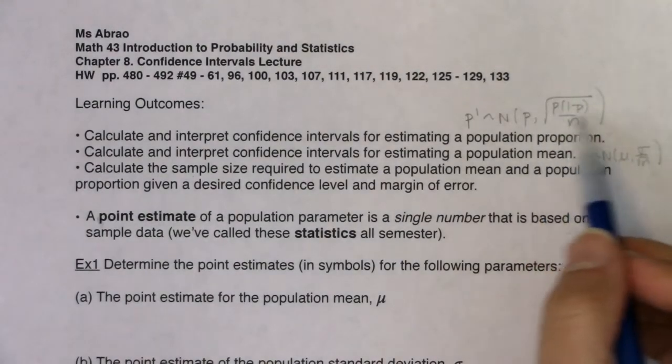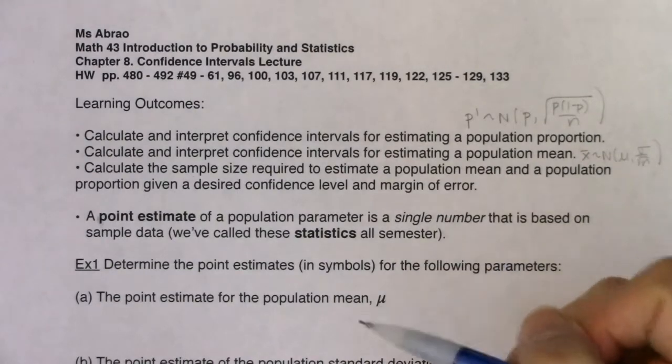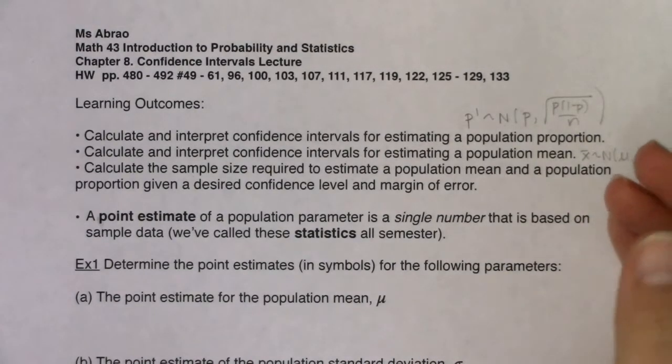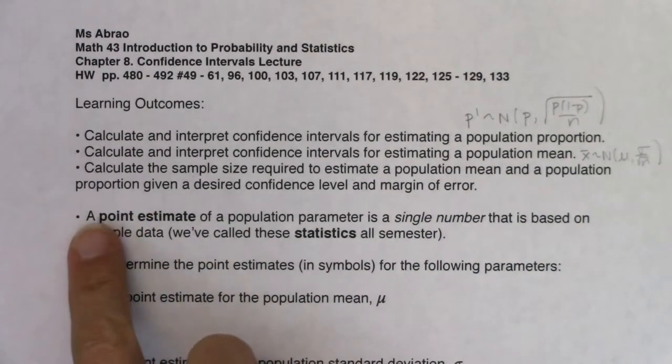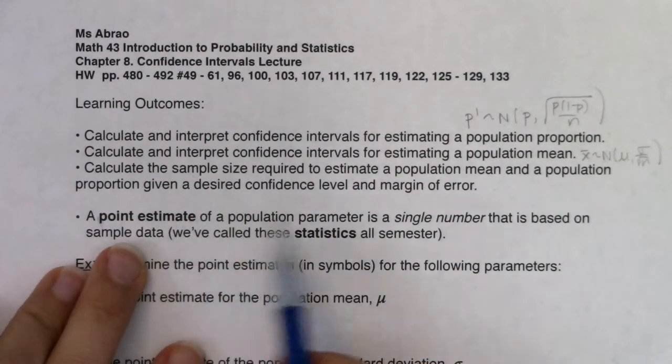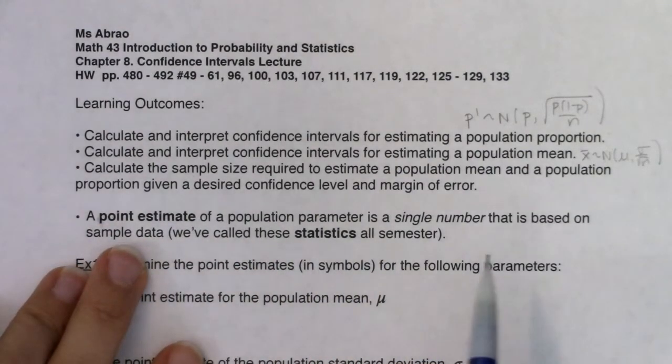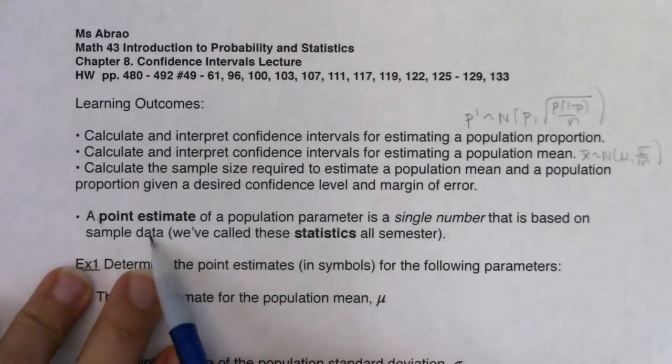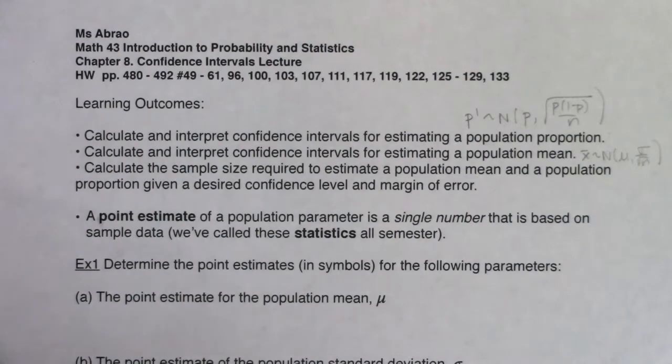When you hear me talk about point estimate, a point estimate of a parameter is a single number - one number that is based on sample data. We've been calling these statistics all semester long. What we're going to do with example one is just make sure we have the symbols down. Do we know what each symbol stands for? These aren't new to us, but they're going to seem new. Just remember, we've seen all of these symbols before.